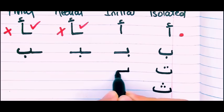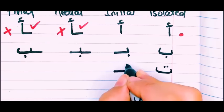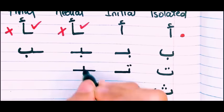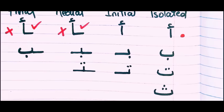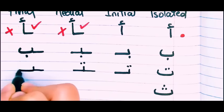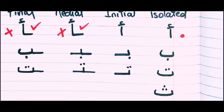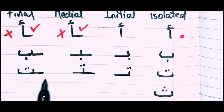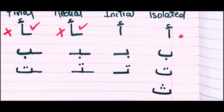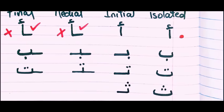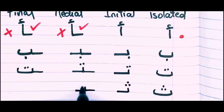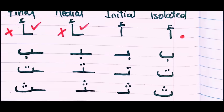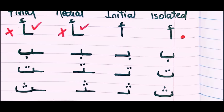Te starts the same way as Be, but you put two dots on top. In the medial form, two dots on top. At the end, same way — you connect it, then you curve it or put the isolated form shape. Then Tha takes three dots instead. Alif, Ba, Ta, Tha.